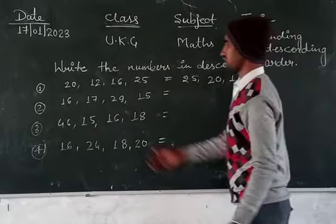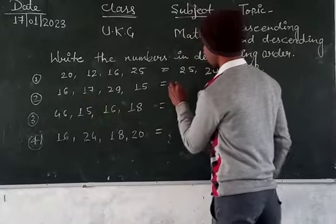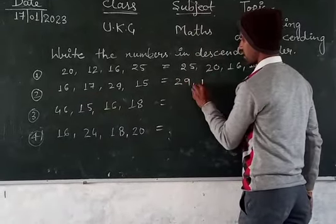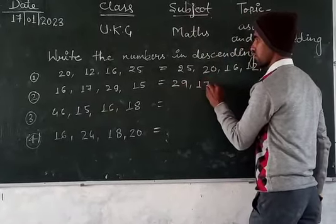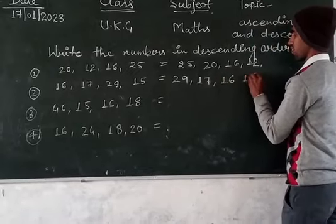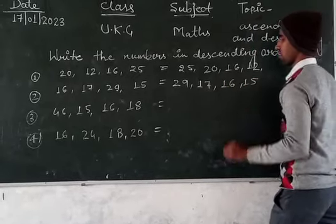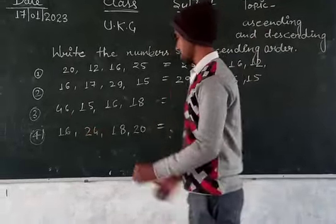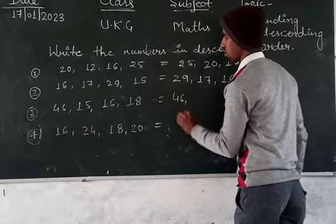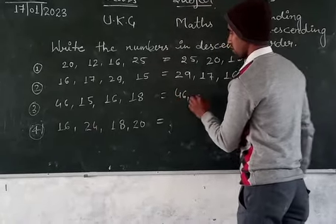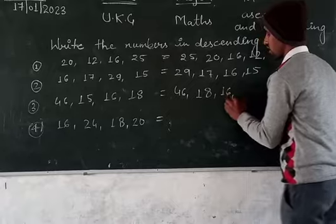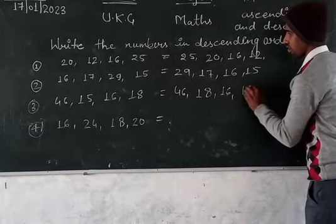Next example. The biggest number is 29. Then 17, then 16, and 15. Next example: 45, 18, 16, and 15.